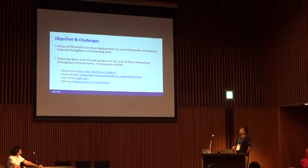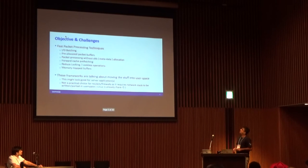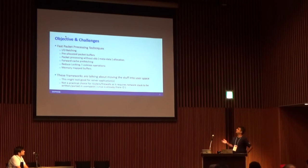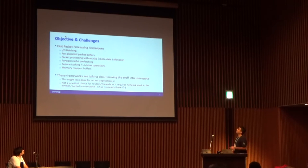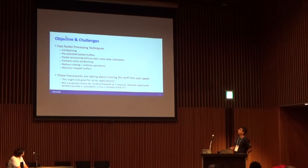There has been a lot of work in this space — we discussed last day things like NetChannel, Packet Shader, Intel DPDK, and NetMap. The crux of all of them is processing techniques to improve throughput: IO batching, pre-allocated packet buffers, packet processing without SKB allocations, forward cache prefetching, lockless or reduced locking paths, and memory-mapped buffers.